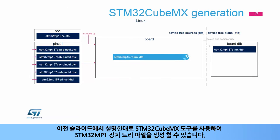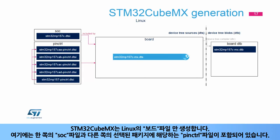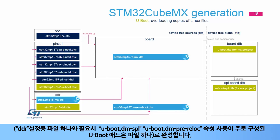As explained in previous slides, the STM32CubeMX tool can be used to generate STM32MP1 device tree files. For Linux device tree file generation, STM32CubeMX only generates the board file for Linux that includes the SOC file and the pin CTRL file corresponding to the selected package. STM32CubeMX also does a copy of the Linux DTS file for U-Boot and completes it with two new files: one for the DDR configuration and one for U-Boot add-ons, mainly consisting of U-Boot DM SPL and U-Boot DM pre-reloc properties.